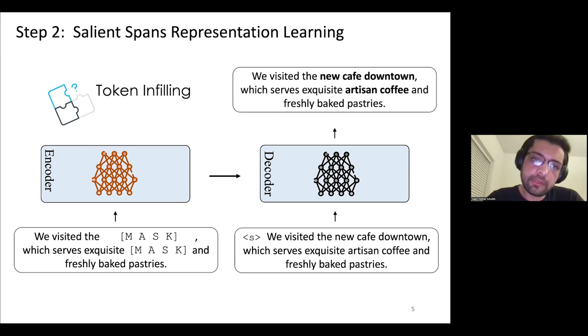This is effectively the token infilling task that BART also uses with this difference that BART uses random token masking, but our system reinforces an informed masking approach here, which can come in handy in the downstream summarization task.